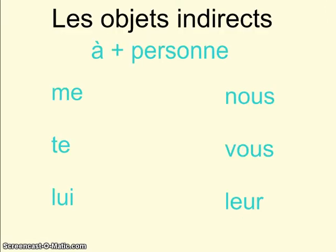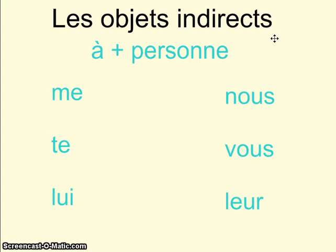Mais notre leçon, dans le chapitre 6, c'est pour les objets indirects. Indirect — c'est un peu différent. Vous trouverez cette leçon à la page 204 dans le livre. Je pense que c'est très important que vous ouvriez vos livres à la page 204 et regardiez la leçon avant de regarder cette vidéo. C'est aussi une très bonne idée de prendre des notes. Alors, les objets indirects.